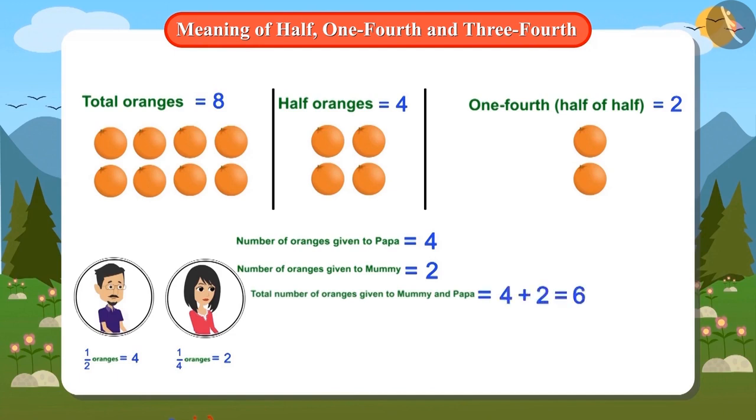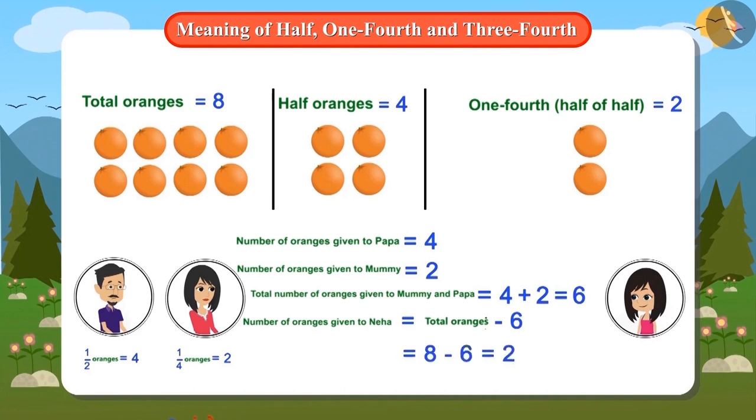This means that six oranges will be given to Neha's Mummy and Papa. Then how many oranges will Neha get? You are absolutely right. Neha will get two oranges.